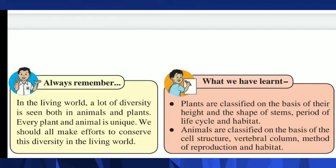Always remember, students, in the living world, a lot of diversity is seen both in animals and plants. Every plant and animal is unique. We should all make efforts to conserve this diversity in the living world. Plants are classified on the basis of their height and the shape of stems, periods of life cycle, and habitat. Animals are classified on the basis of their cell structure, vertebral column, method of reproduction, and habitat.